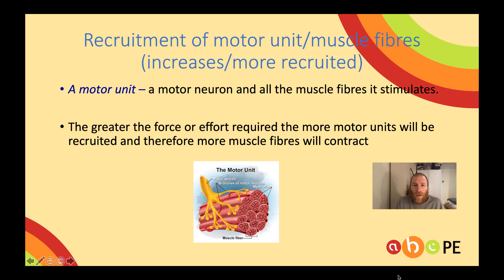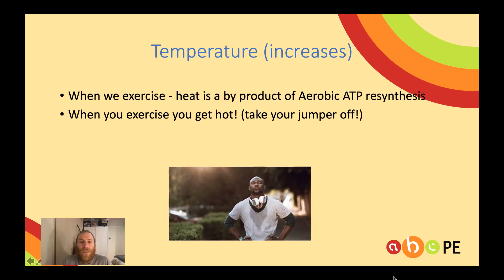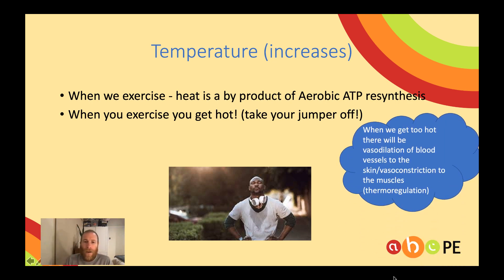The T in the FORTU acronym stands for temperature — when we exercise, we're going to get hot, because heat is a byproduct of aerobic ATP resynthesis. That's why you might start your training session with your warm-up jumper on, but after running around for a while you'll be able to take it off. When we get really hot, thermoregulation occurs through vasodilation of blood vessels to the skin and vasoconstriction to the muscles, and that causes sweating.